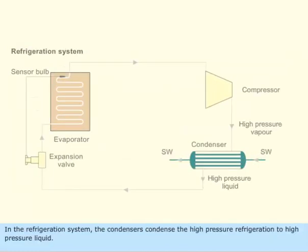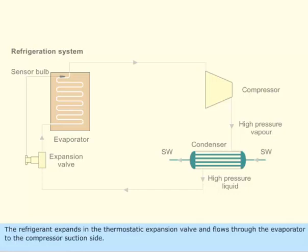In the refrigeration system, the condensers condense the high pressure refrigeration to high pressure liquid. The refrigerant expands in the thermostatic expansion valve and flows through the evaporator to the compressor suction side.